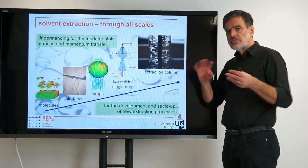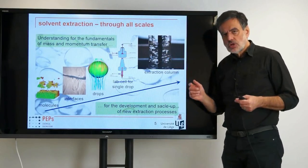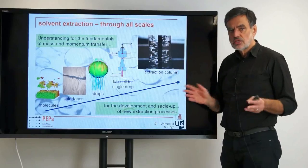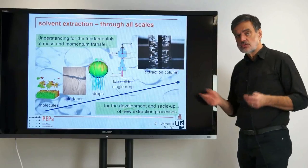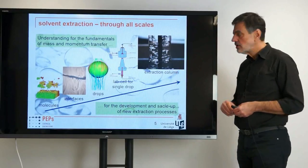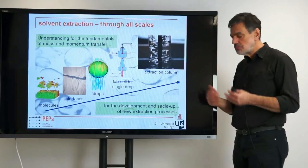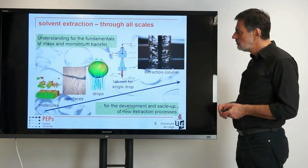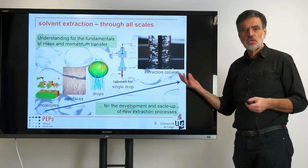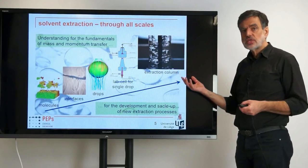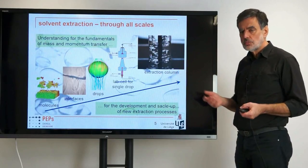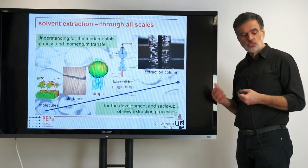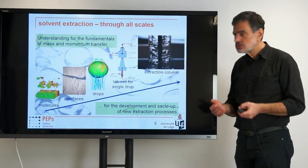Of course we need to take into account that there are more drops around, that they are interacting with the internals and everything, and that reactions may occur — all that needs to be and can be taken into account. It works with an accuracy of 5 to 10%, which is quite good, more or less comparable to experimental uncertainty, so we really can predict what's going on.